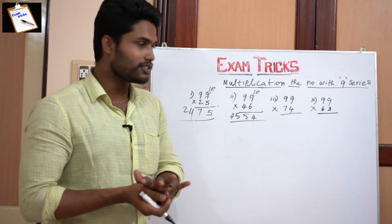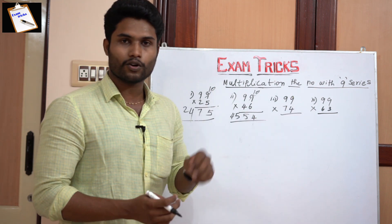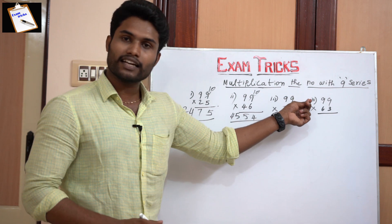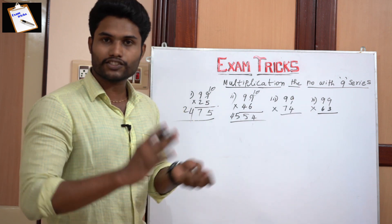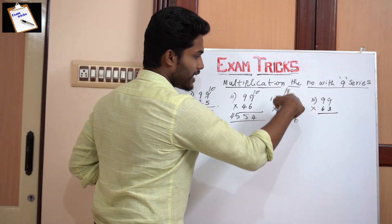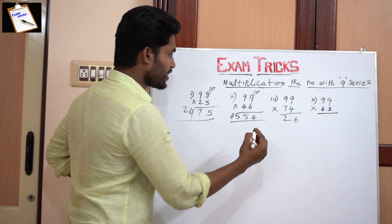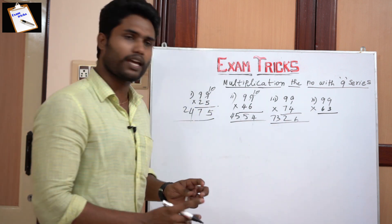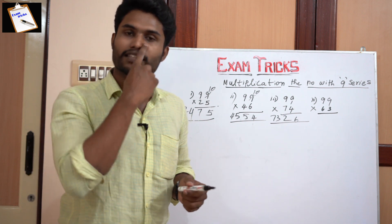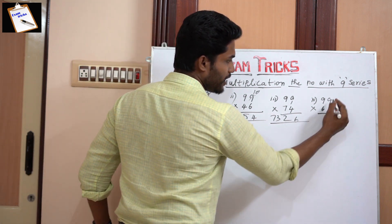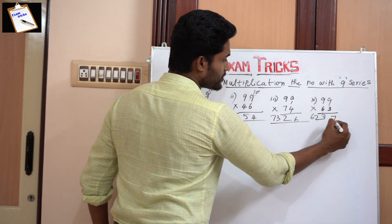I hope you understand this logic. You can try to answer this question, for example 99 times 74. Don't write 10 in the exam, you directly assume the number 9 as 10. So 10 minus 4 is 6, then 9 minus 7 is 2, so the given number is 74, you directly write 73. Then what is 99 times 63? In just three seconds, 10 minus 3 is 7, 9 minus 6 is 3, so 63 becomes 6231.